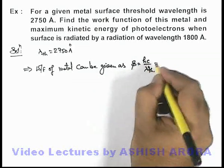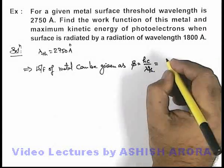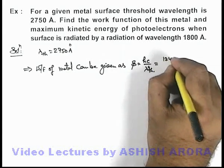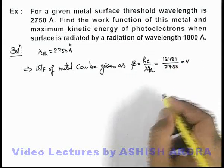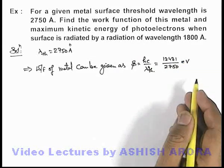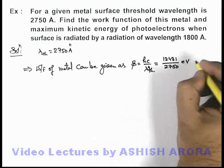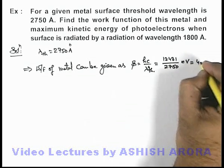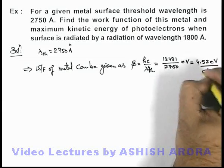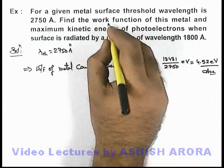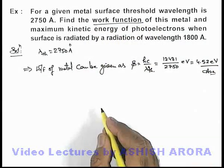And in this situation, directly for numerical calculation, we can write it 12431 by 2750 in electron volt. This conversion we have already studied in the previous topic. So on simplifying, we are getting this work function to be 4.52 electron volt. This is one answer to this problem as we are required to find the work function of the metal.